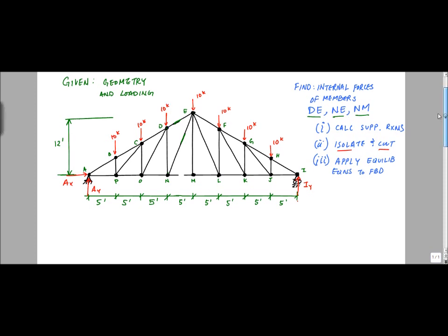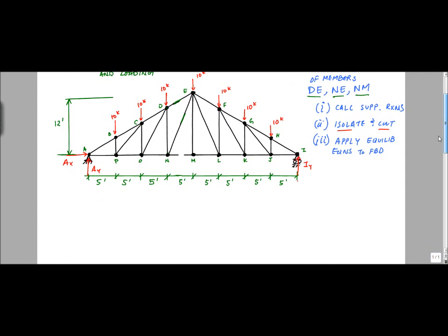Let's calculate the reactions first. I'm not going to apply the equations here because I've got a symmetric structure with a symmetric loading. I have a total loading of 10, 20, 30, 40, 50, 60, 70 kips. It's symmetric, so each vertical reaction takes half — that means AY equals IY equals 35 kips. And by sum of forces in the x-direction equal to zero, AX equals 0.